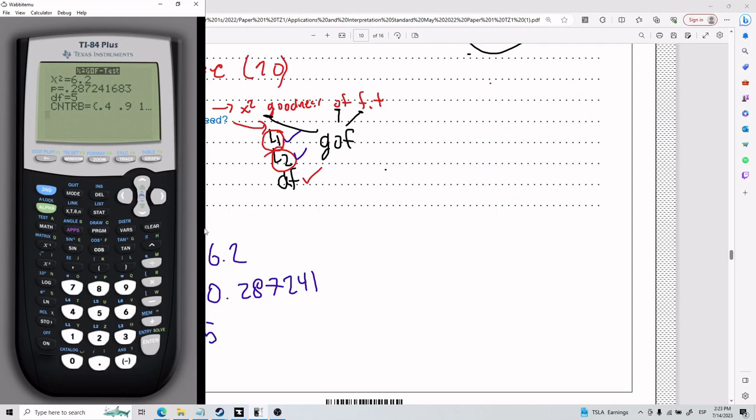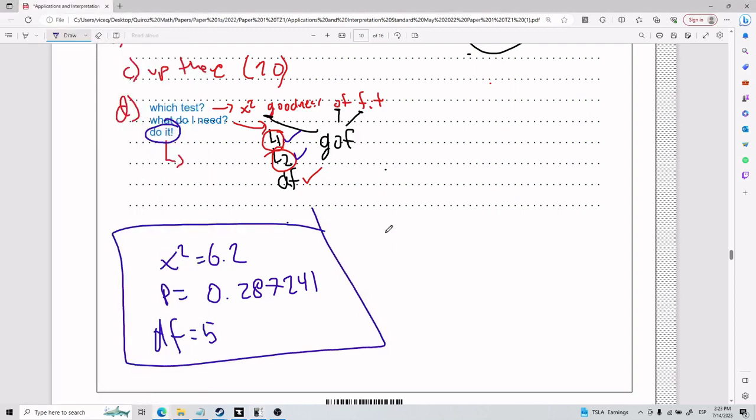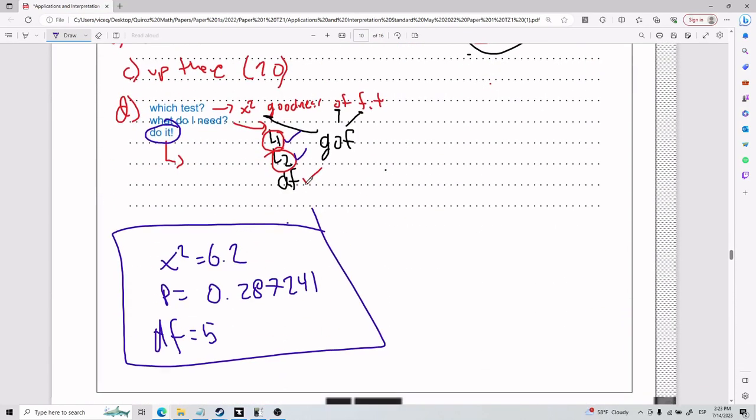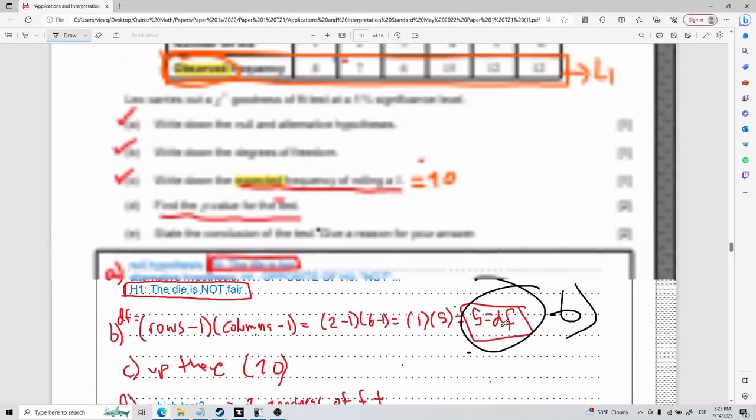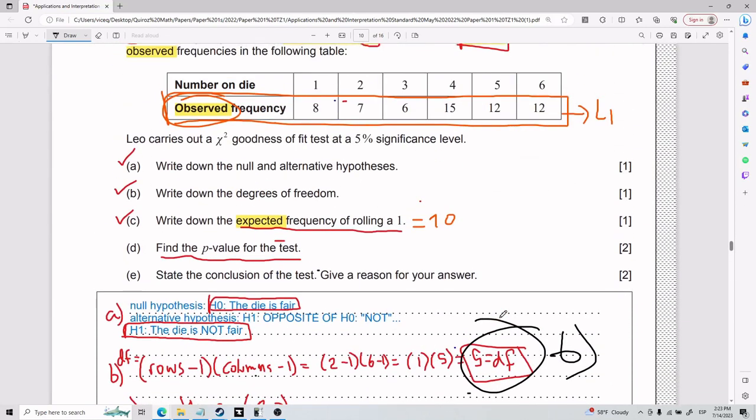And then there's cn, trb. Just don't worry about that. This is all you will probably ever, ever need. So write down the p value for the test. Well, the p value for the test, as we just found, is this guy here. And since we like significant figures, it's going to be 0.287. You can write down the whole number, it's fine. How do significant figures work? Well, I go to 1, 2, and 3. I compare this one to the one on the right. Since it's 4 or lower, that means I keep it at the number that it is. I end up with this. 0.287. So part D is going to be 0.287.